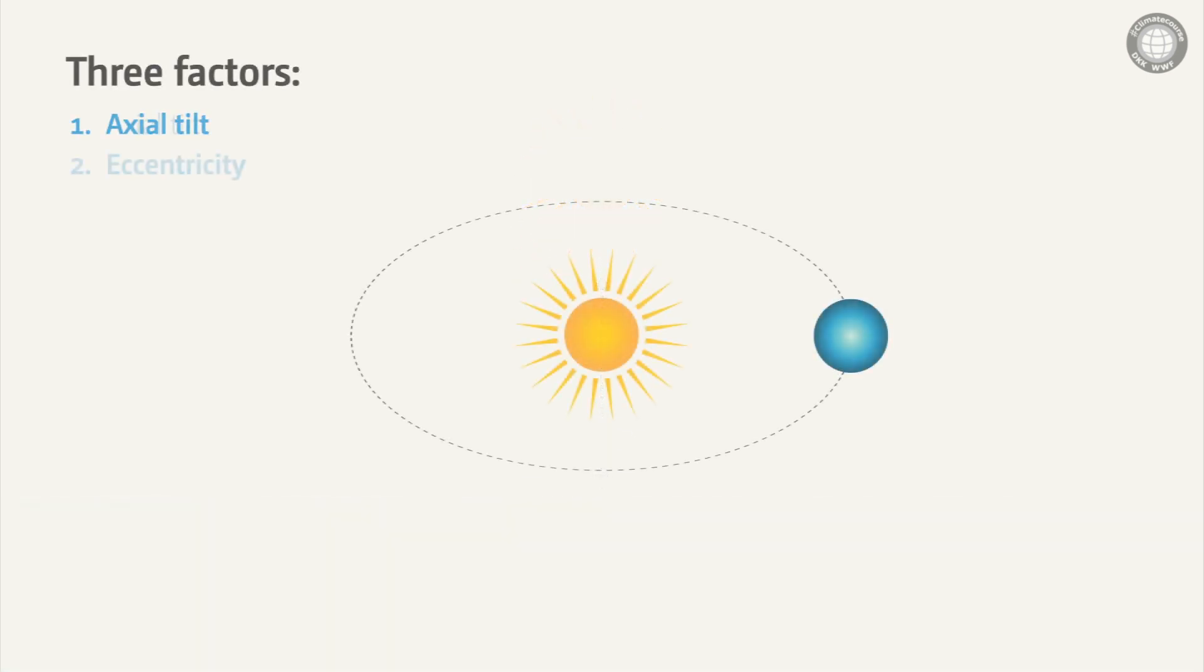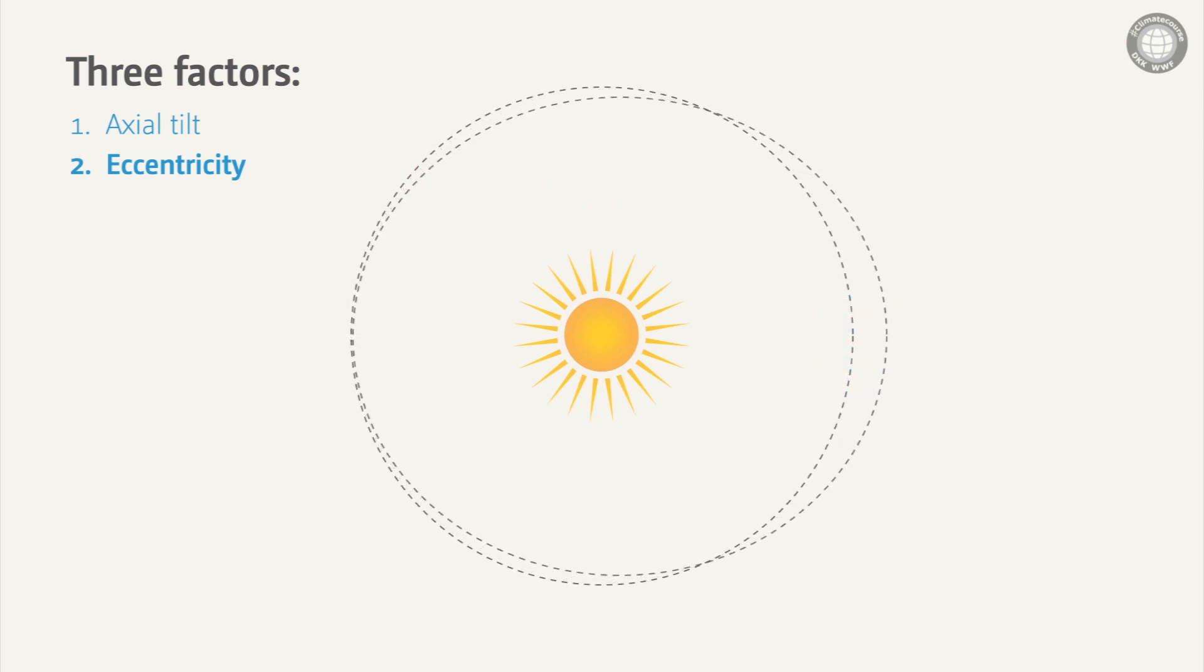The second major factor is eccentricity. The Earth orbit around the Sun varies between an almost circular and a slightly elliptical shape. The orbital period of this variation is very long, about 100,000 years.